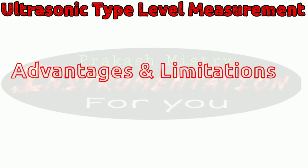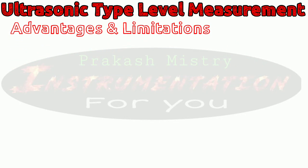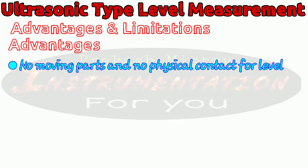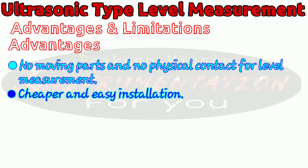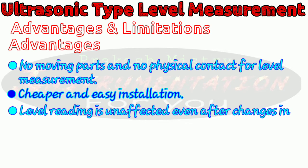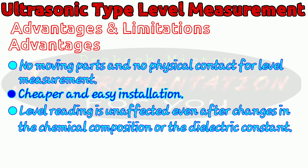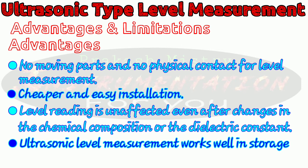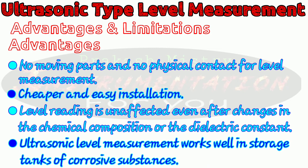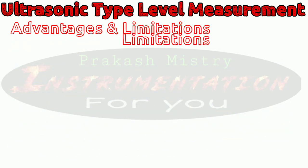Now let us look at the advantages of ultrasonic type level measurement. First, the ultrasonic level transmitter measures the level without making physical contact with the product. Second, the ultrasonic transmitter is cheaper compared to a radar transmitter and is also easy to install. Third, there is no difference in accuracy due to changes in the chemical composition or dielectric constants of the process fluid. Ultrasonic level measurement works well in storage tanks of corrosive substances such as hydrochloric acid, sulfuric acid and caustic soda, though one must ensure the sensor material is chemically compatible.